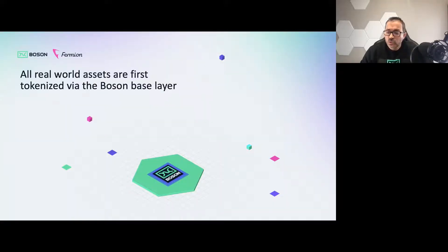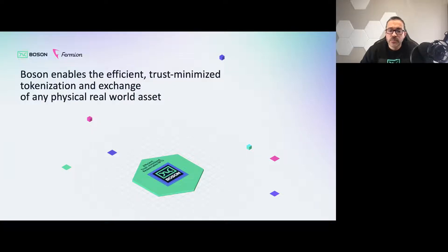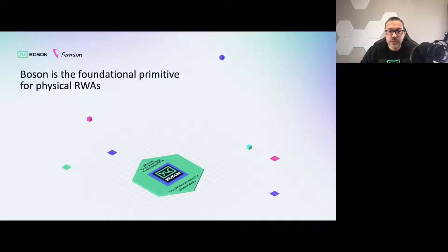To start with, all real-world assets are first tokenised via the Boson base layer. Boson enables the efficient, trust-minimised tokenisation and exchange of any physical real-world asset. Boson is the foundational primitive for physical real-world assets.